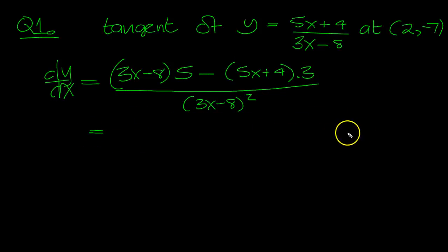So x is 2. We've got 6 minus 8. 6 minus 8 is minus 2 times 5 is minus 10. Minus 10, 14, 3, 14 is 42 over... This will be minus 2 squared is 4. So it's minus 52 over 4. 26, 13 with a minus, isn't it?